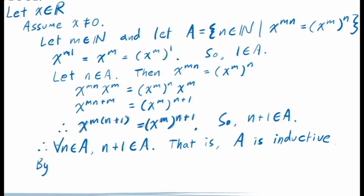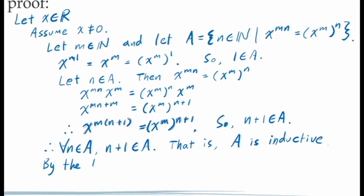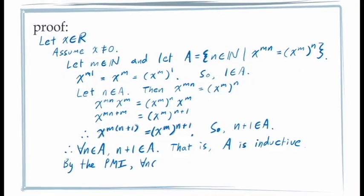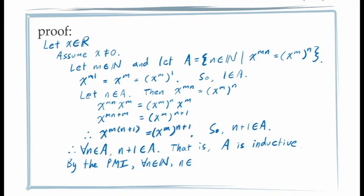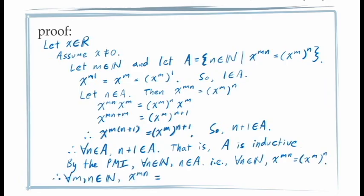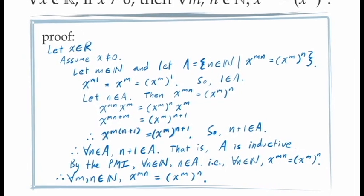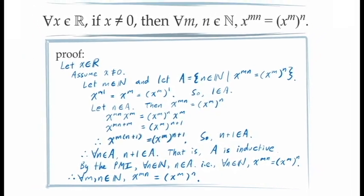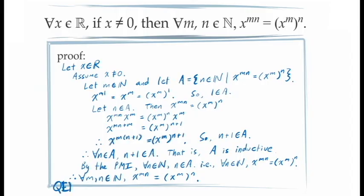The principle of mathematical induction then tells us that since A is an inductive set containing the number 1, A contains all natural number values of n. And so our equation holds for all values of n, and since m was arbitrary, it also holds for all values of m. And of course, since x was an arbitrary non-zero real number, we now know that this equation holds for all such real numbers. And that completes the proof.